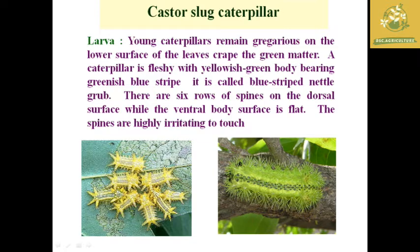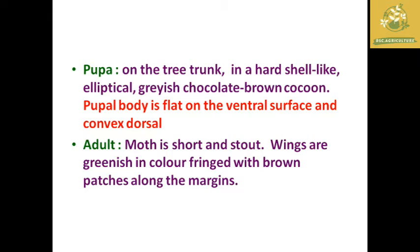The slug caterpillar feeds on the lower surface of the leaf, scraping the chlorophyll content. The upper surface of leaves remains unharmed initially. It feeds gregariously on the lower surface. The pupa is greenish in color, short and stout, and very hard in shape, with a brown patch along the margins.